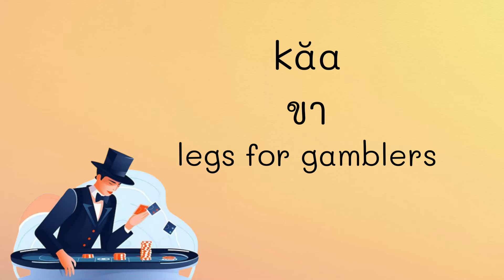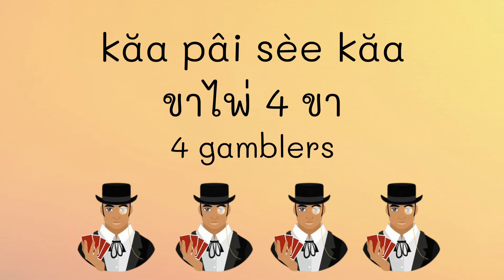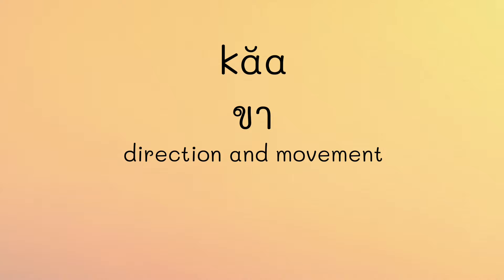In the context of gambling, especially in card games, ขา also refers to a gambler and serves as a noun classifier for gamblers. For instance, when there are four gamblers, we say ขาพนันสี่ขา — ขาพนัน means card gamblers, สี่ means four — ขาพนันสี่ขา for four card gamblers.